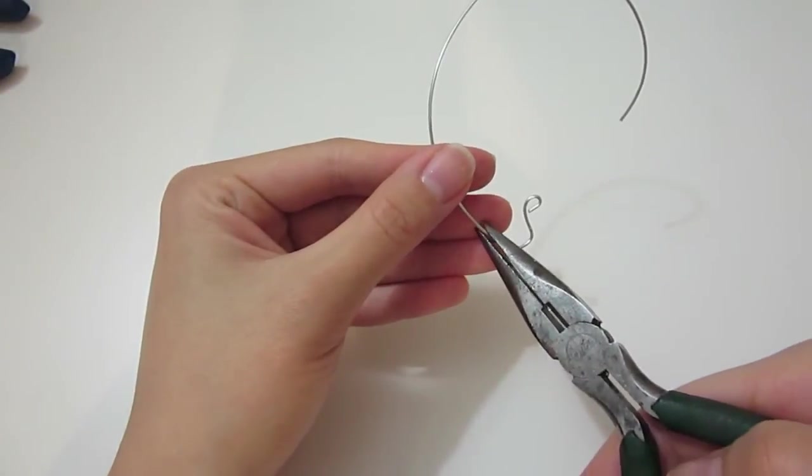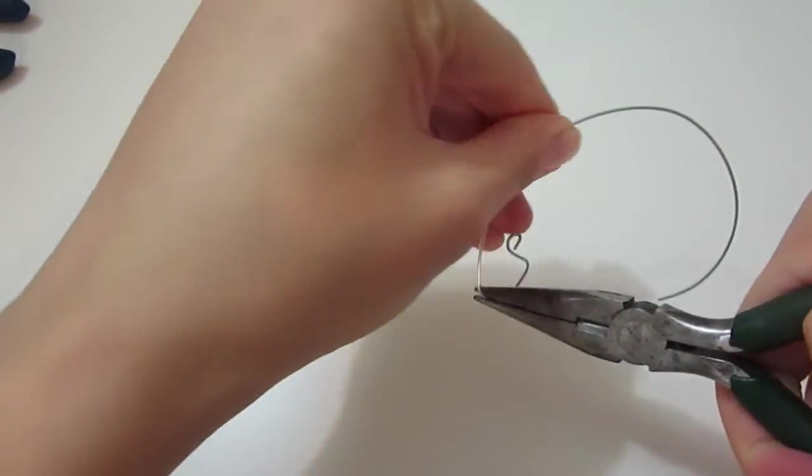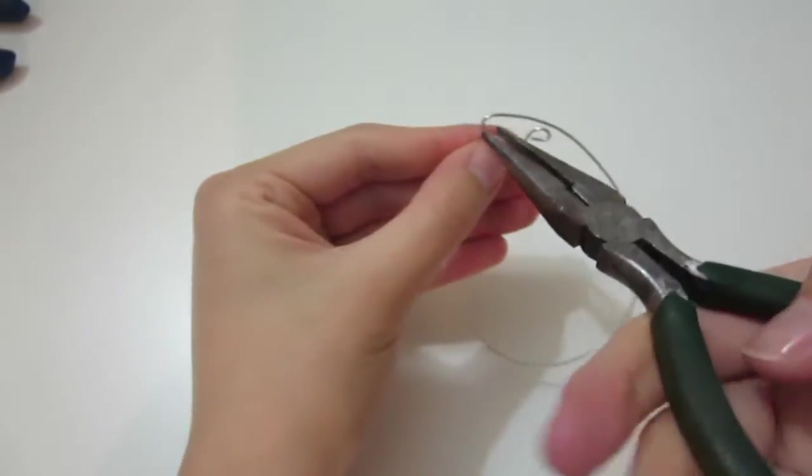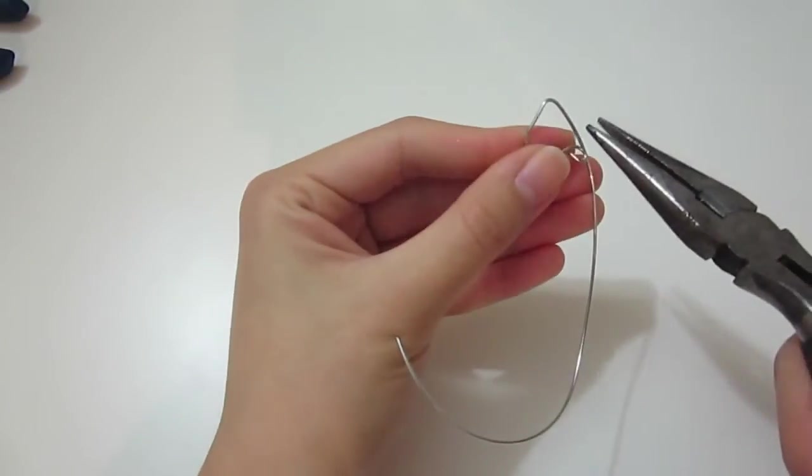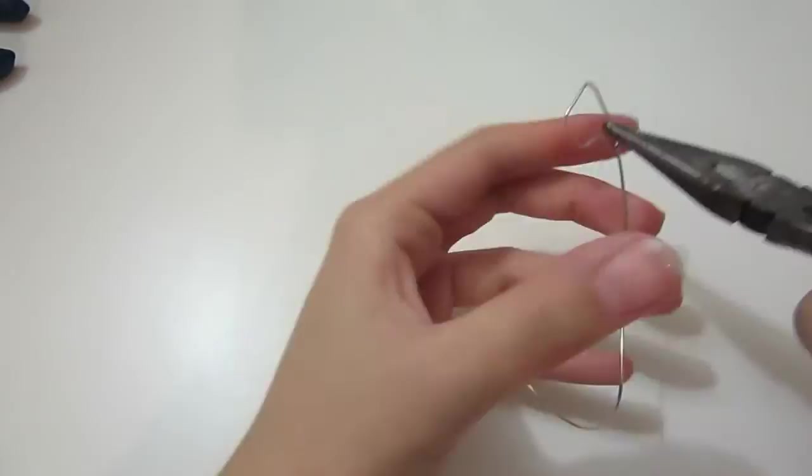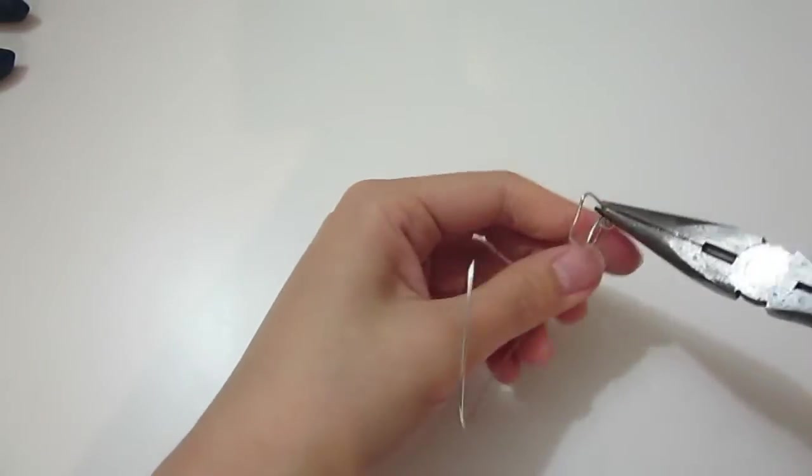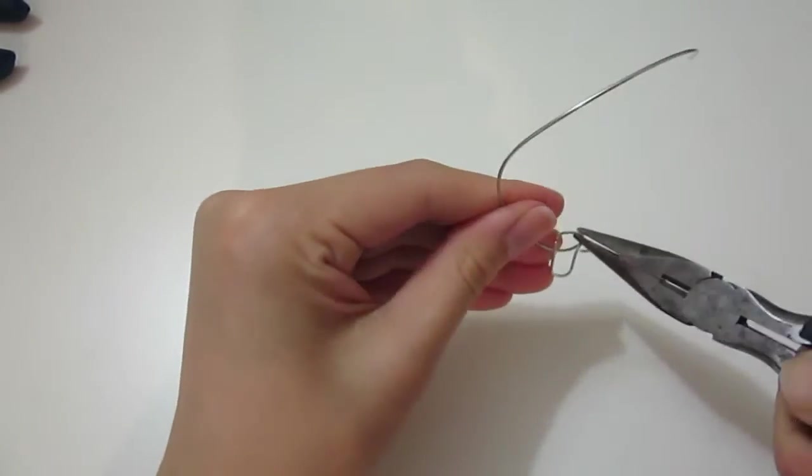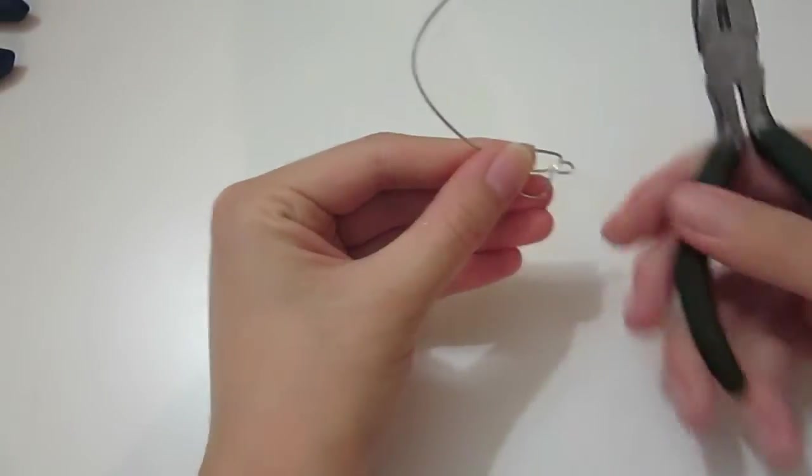Next we will make a little loop over the cup shape to have it look like the rim of the cup. Don't worry if it doesn't turn out the way you want the first time, you can always undo it and adjust it to get it exactly the way you want.